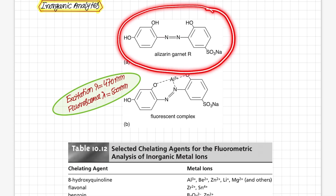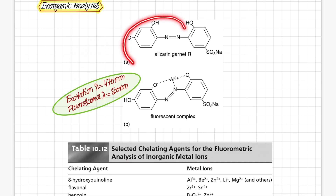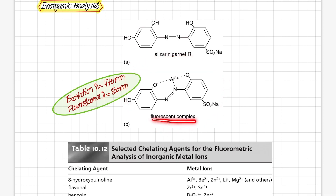For example, here we have a fluorescent dye whose commercial name is Alizarin Garnet R. This forms a very stable complex with aluminum. Since aluminum(3+) is non-fluorescent, we create a complex with aluminum, and this complex is fluorescent. The excitation wavelength used for this complex is 470 nanometers, whereas the fluorescence emission is measured at approximately 500 nanometers.